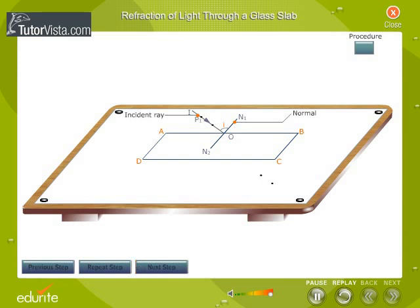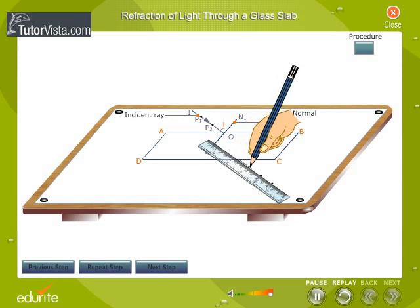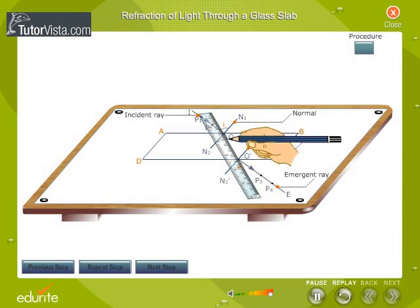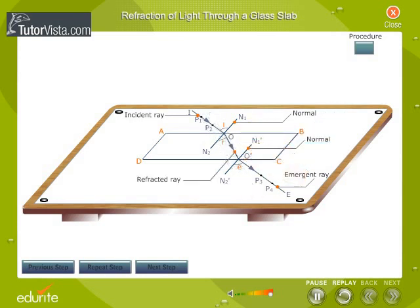Mark the pin points P1, P2, P3 and P4. Join P3, P4 to represent the emergent ray O-E. Join OO dash. OO dash is the refracted ray.